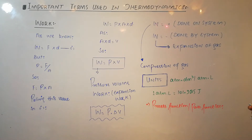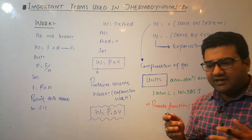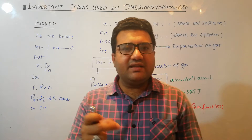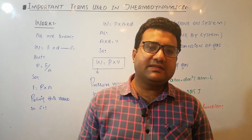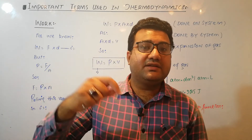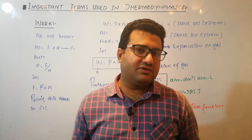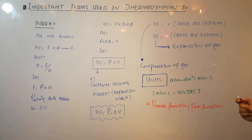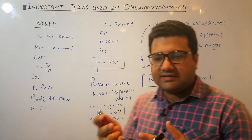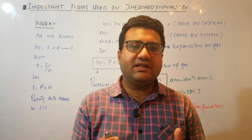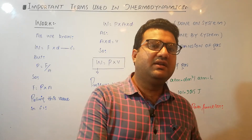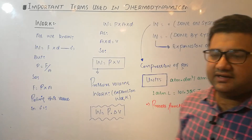Work may be given a positive or negative sign. Work is positive when it is done on the system by the surroundings, meaning energy is transferred from surroundings into the system. Work is negative when it is done by the system on the surroundings, meaning energy is transferred from the system to the surroundings.